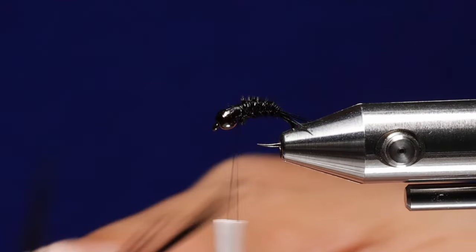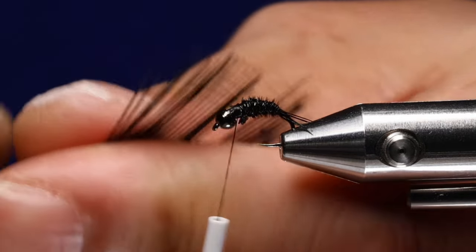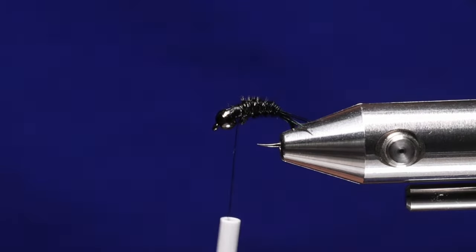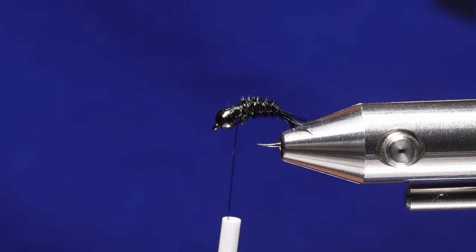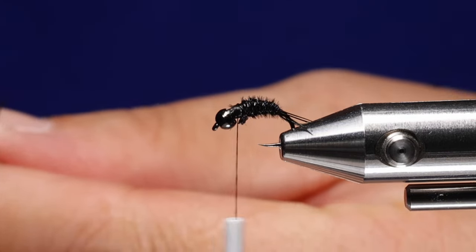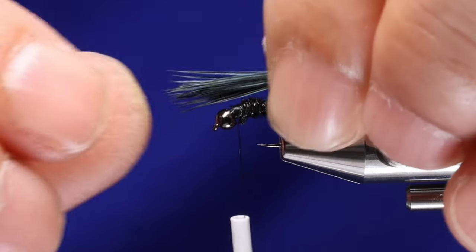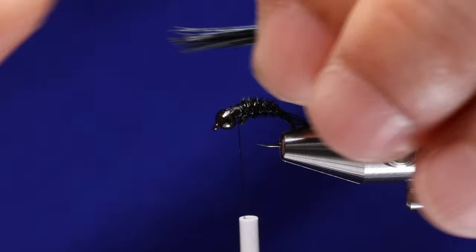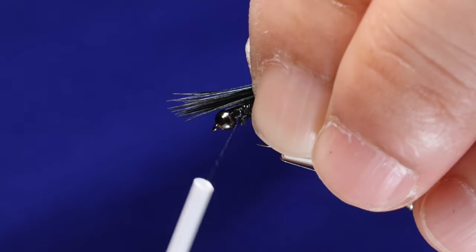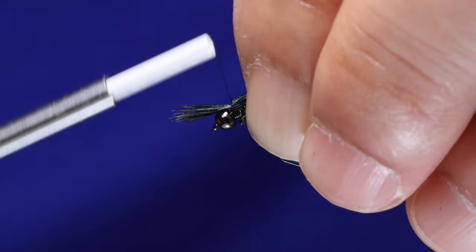What you want to do is you want to try to align a clump of pheasant tail. And then instead of pulling it out, I like to cut it off so that way it stays relatively aligned. And then trying to keep those tips aligned, I'm going to measure out my legs. And then I'm going to capture it right there.